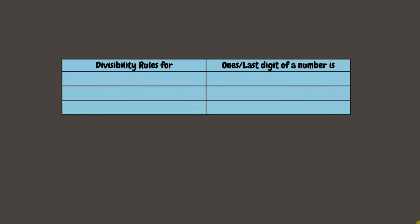To summarize: to know if a number is divisible by 2, 5, or 10, we simply look at its last digit. If the last digit is 0, 2, 4, 6, or 8 — even numbers — it is divisible by 2. If the ones or last digit is 0 or 5, it is divisible by 5. If the ones or last digit is 0, it is divisible by 10.